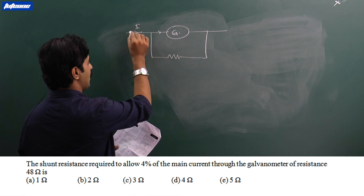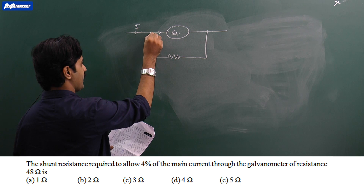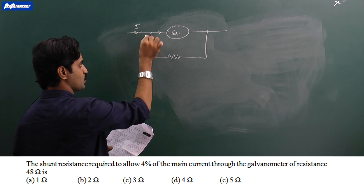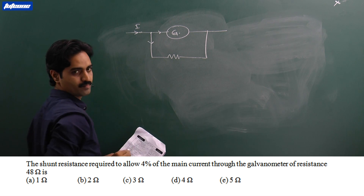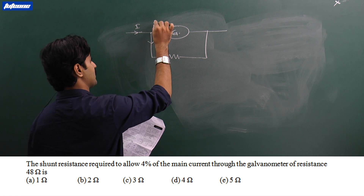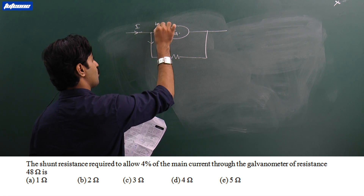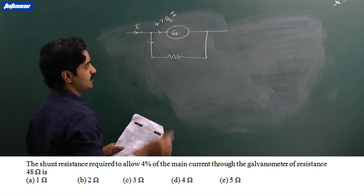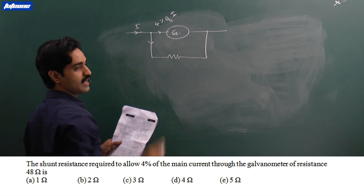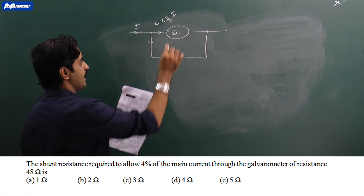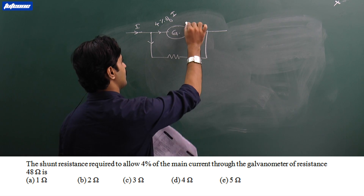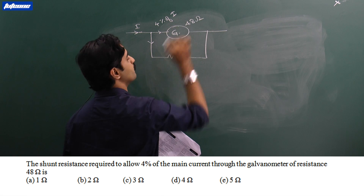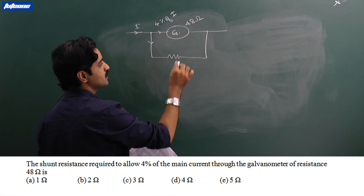At this point, the total current i is split into two parts. The current through the galvanometer is four percent of i, and this galvanometer resistance is given as 48 ohms.